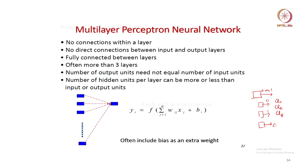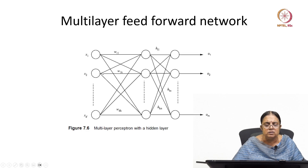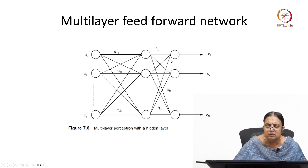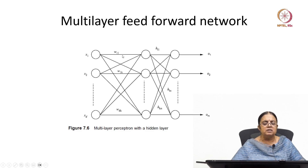Here we have a hidden layer, so we need to find another set of weights. We have the input nodes, the hidden layer, and the output. We have weights w11, w12, w21, w22, and then from the hidden layer to the output we have h11, h12, h21, h22, etc. The weights we are trying to find are these two sets of weights. You are going to get an error — there is a particular output you are expecting but you are getting a certain output — and you use that error to update both sets of weights.